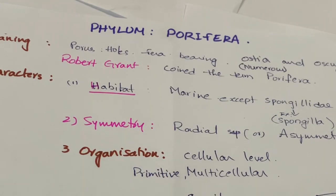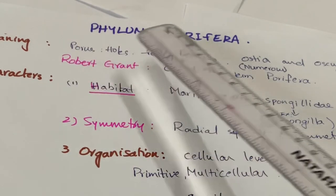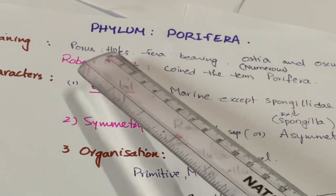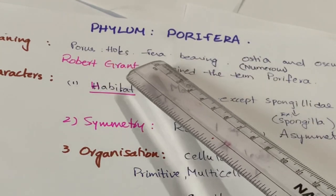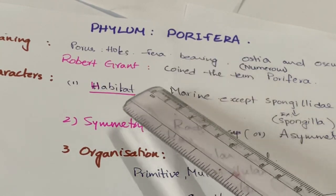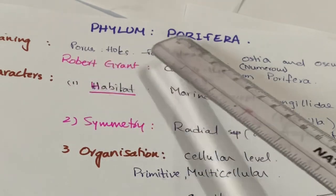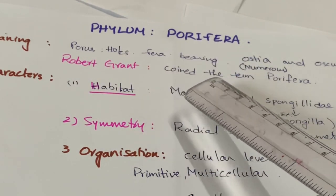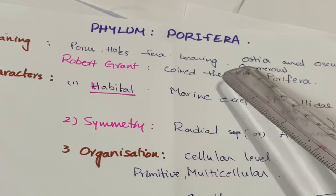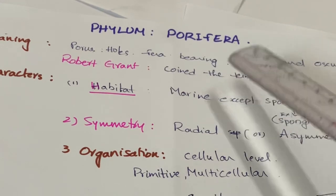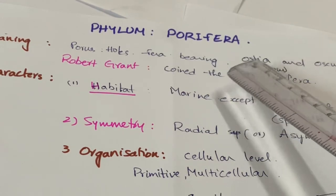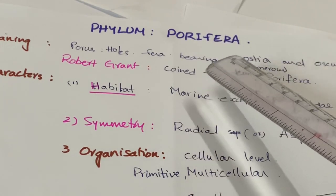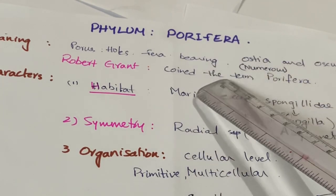Today we will learn about phylum Porifera. The name Porifera means pore-bearing. The body of these animals contains numerous pores. These pores are known as ostia or inhalant pores. As the water enters through these pores, that is why these are known as inhalant pores.